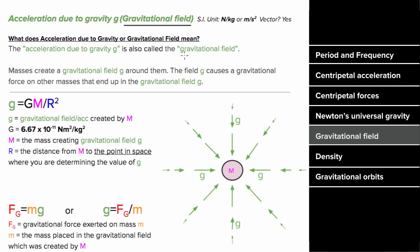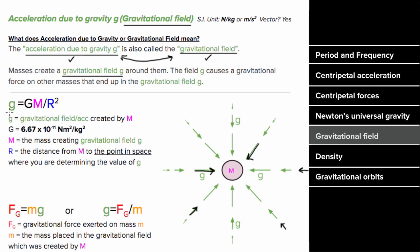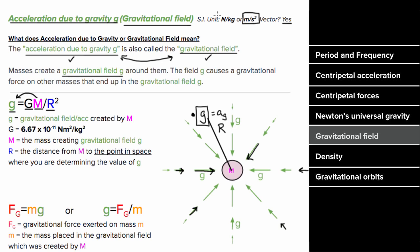The gravitational field is another word for the acceleration due to gravity near an object. You can visualize it as vectors pointing radially inward toward a mass, dying off like one over r squared the farther you get from it. The formula for the gravitational field g created by a mass m is G × m divided by the distance from the center of the mass to the point of interest. This is a vector pointing toward the center of the object, with units of meters per second squared, or equivalently newtons per kilogram.